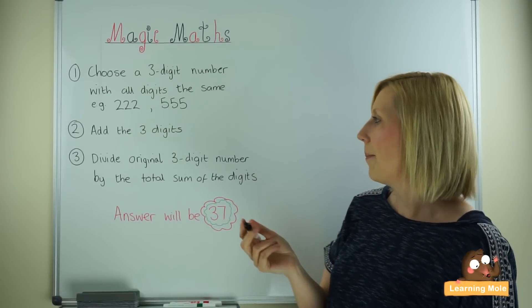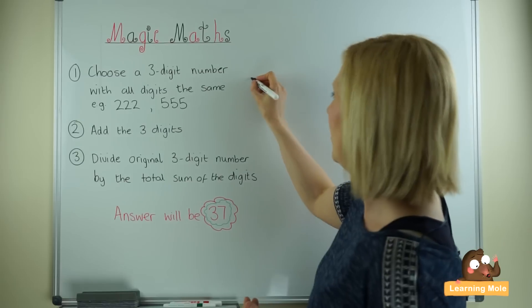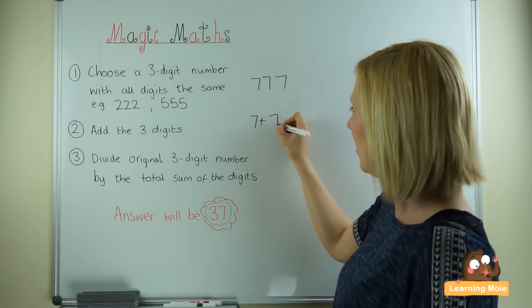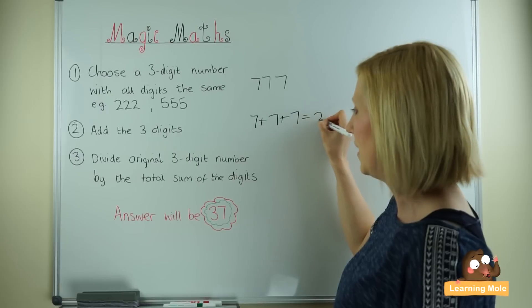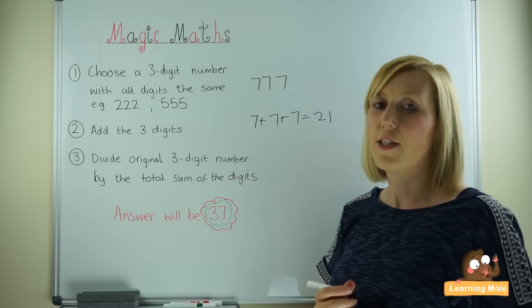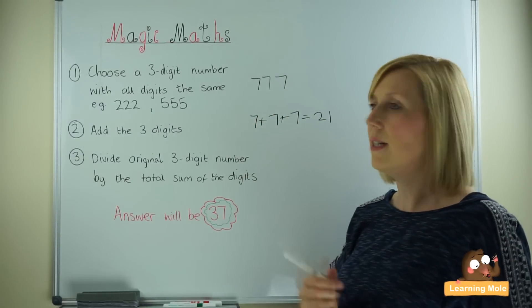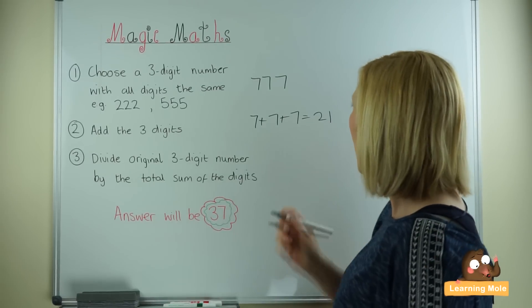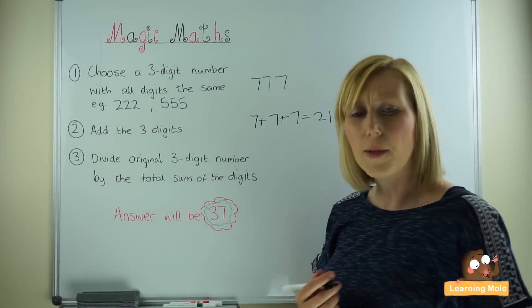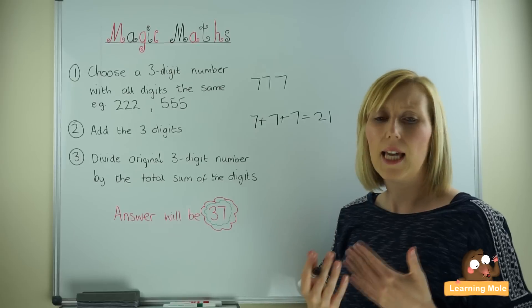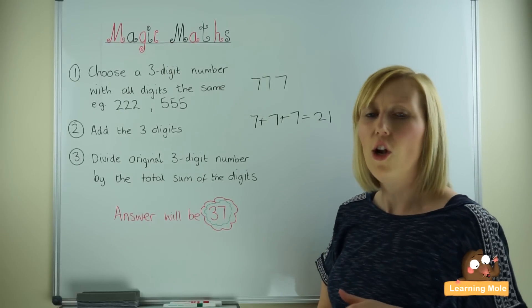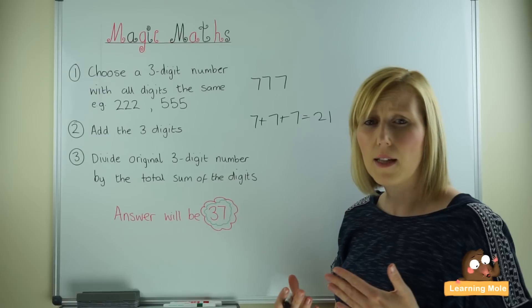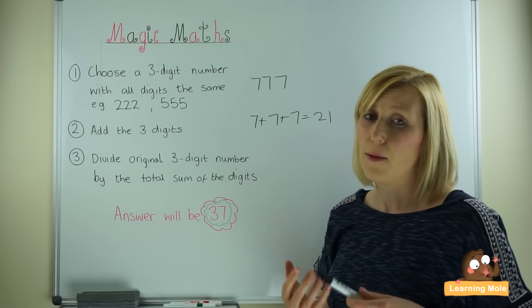So let's choose for example this time 777. Adding the three digits: 7 plus 7 plus 7, which is of course 21. Divide the original 777 by this total sum of the digits, which is 21. This will be a little bit more difficult because this is going to involve long division. Your child may also be using the chunking method at this point, and that is equally fine.